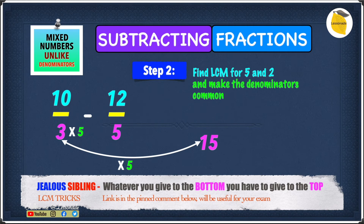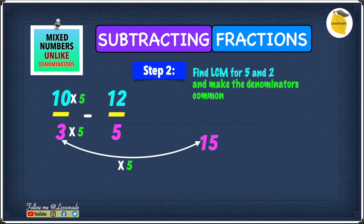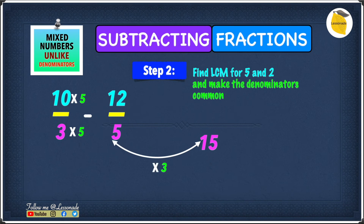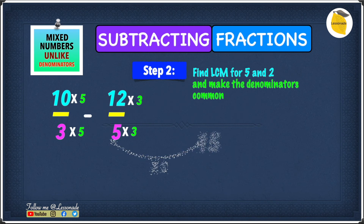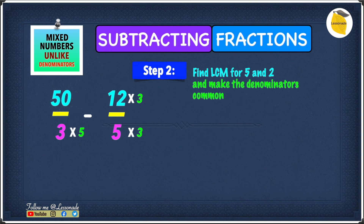Now for 5: what number do we have to multiply 5 by to give us 15? That number is 3, because 5 times 3 gives you 15. Once again, if we multiply the bottom number by 3 we also have to multiply the top number by 3. So 10 times 5 gives us 50, and 3 times 5 gives us 15. Then 12 times 3 gives us 36, and 5 times 3 is 15.